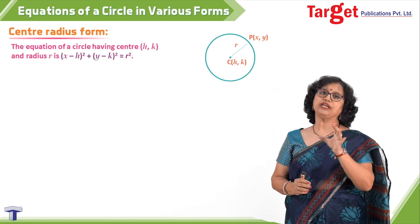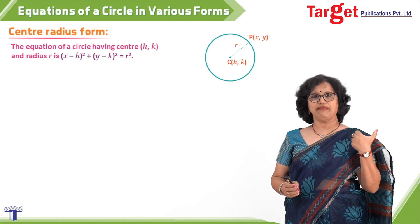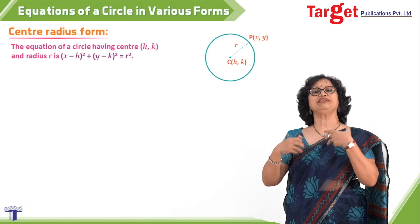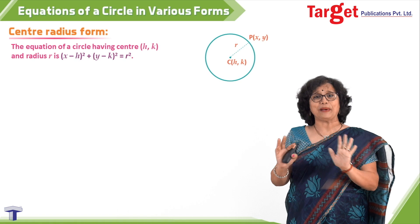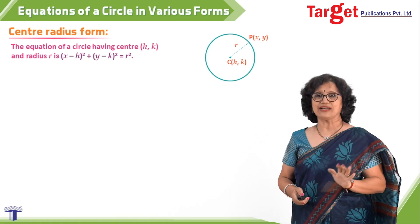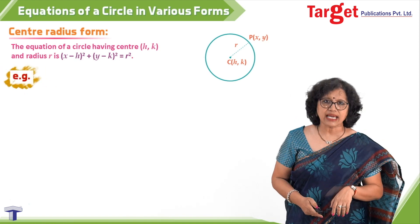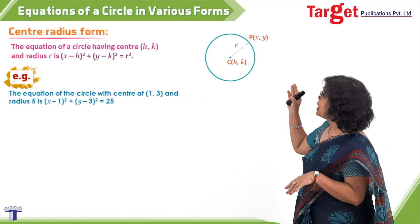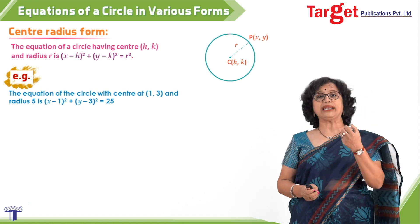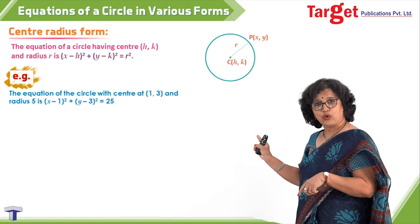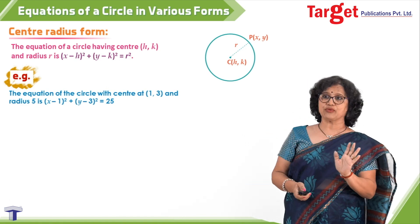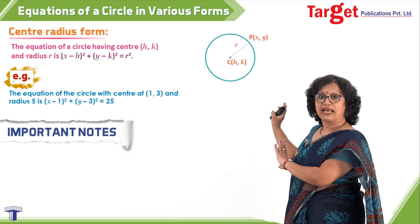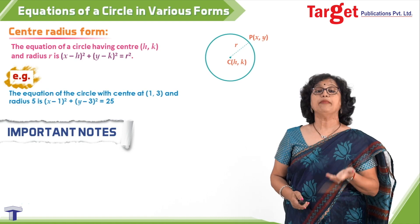If you substitute h = 0 and k = 0 in this form, you get the previous simpler form. So the previous form is just an application of this one. For example, if the center is (1, 3) and radius is 5, the equation is (x−1)² + (y−3)² = 25. You can simplify further if you wish.